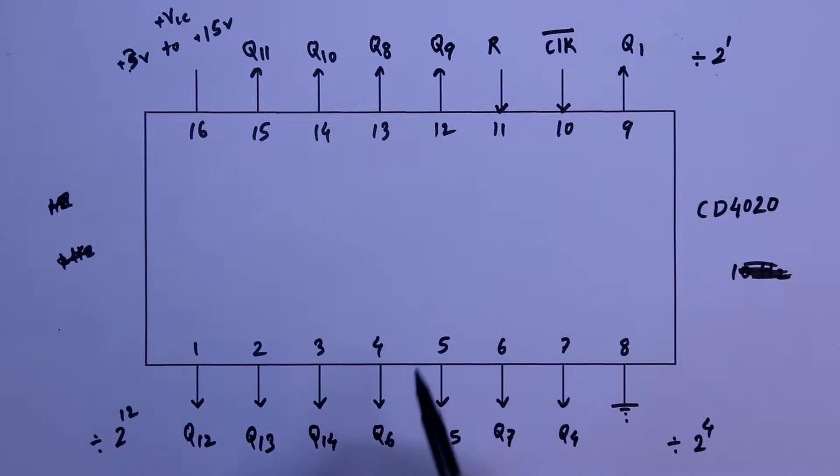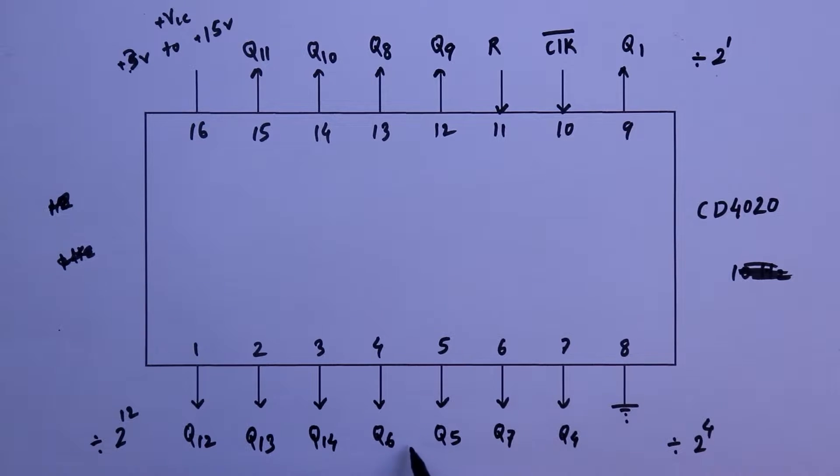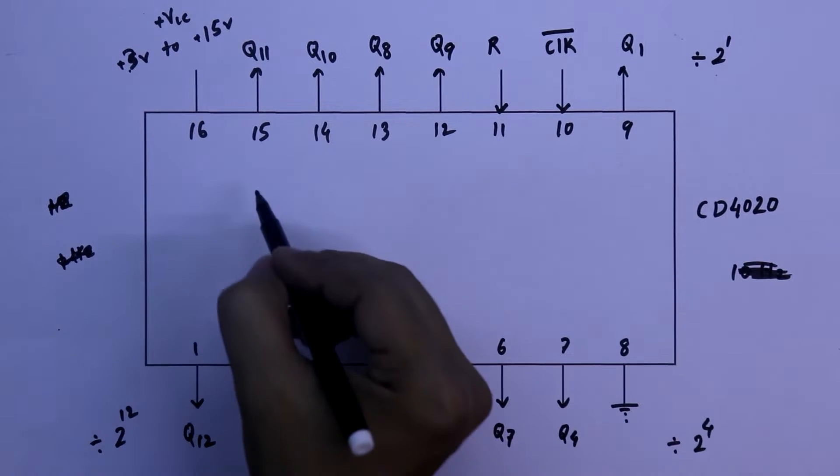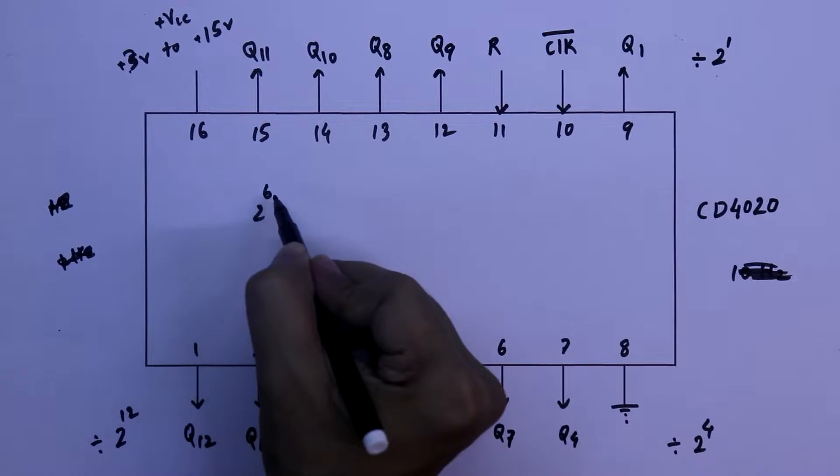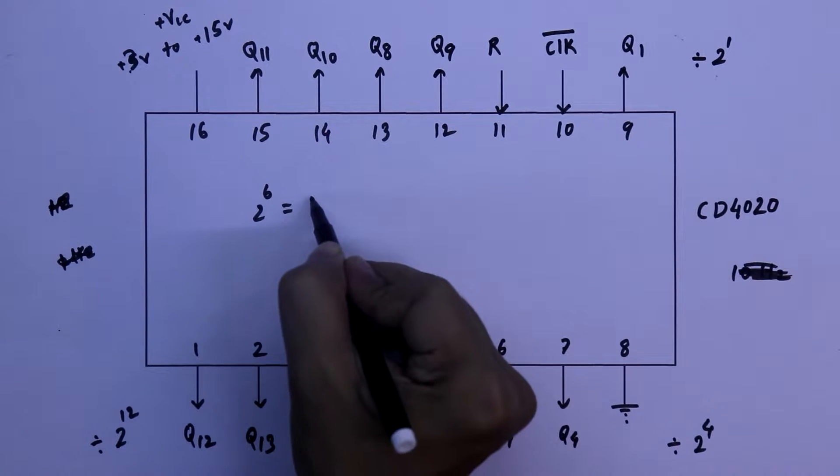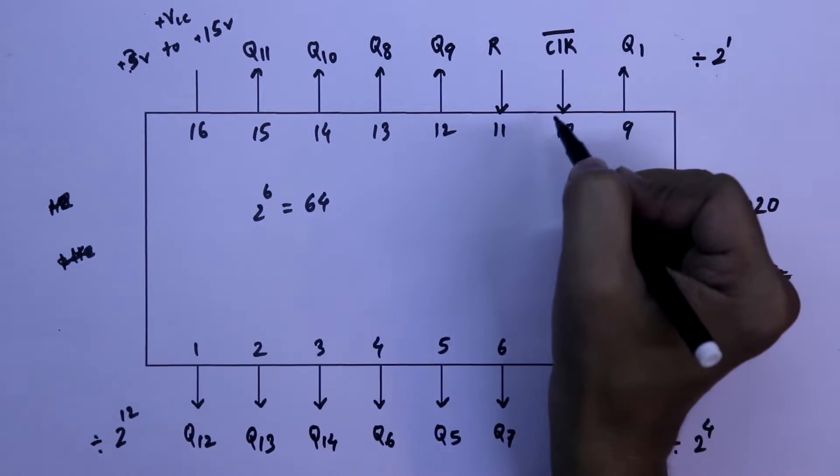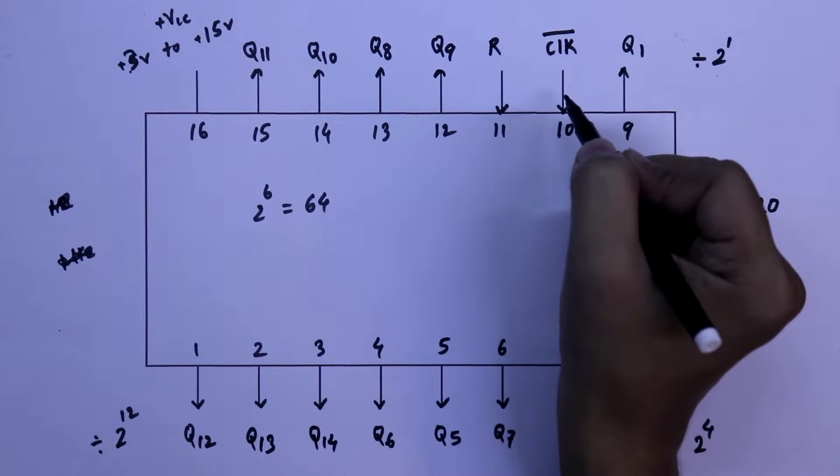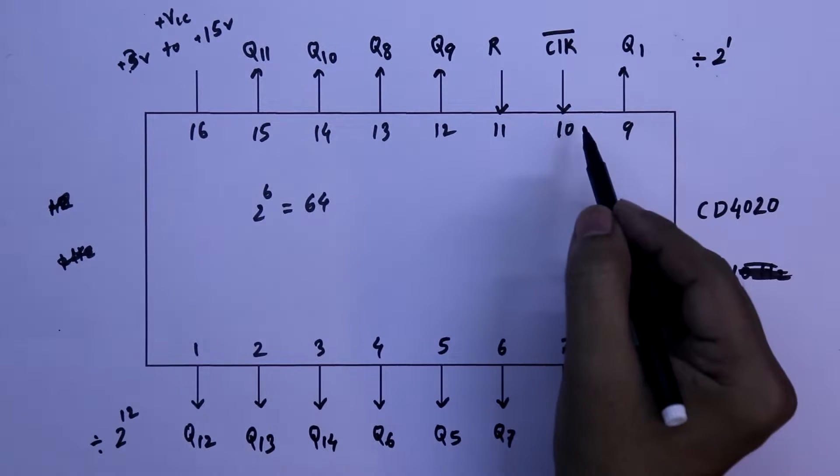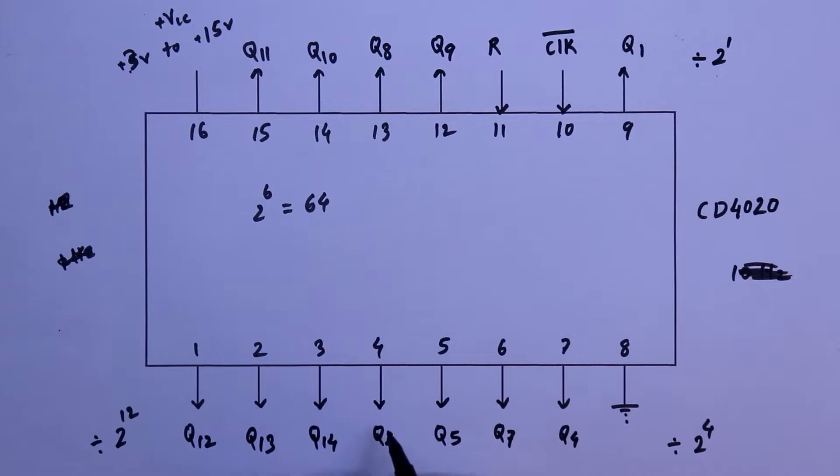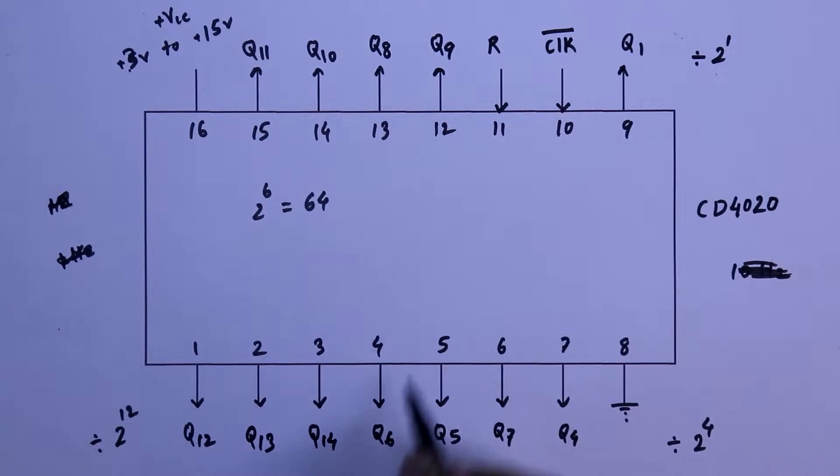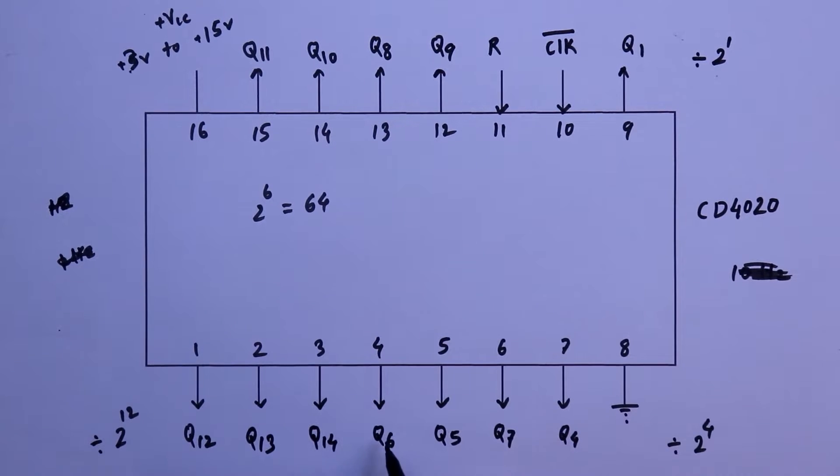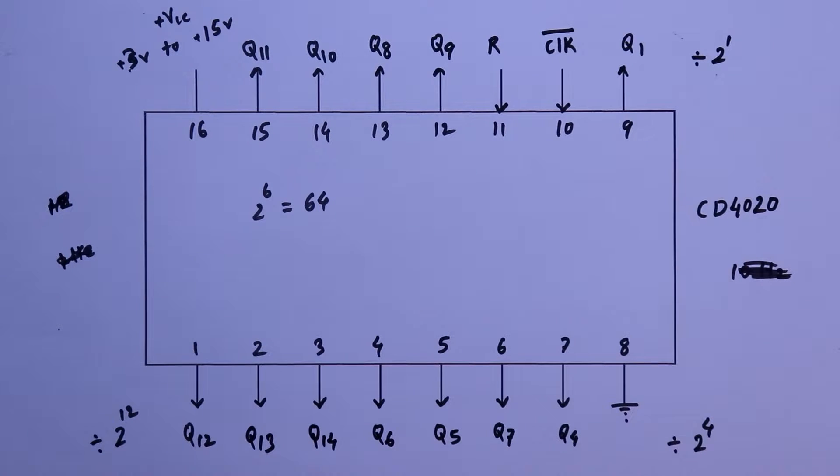For example, let's take pin number 4. It is Q6. Q6 means 2 to the power 6, and it is equal to 64. So if the input frequency is 64 Hz, then the output in pin 4 will be 1 Hz, because it is dividing 64 Hz by 2 to the power 6. 64 by 64, it is 1. So this is how we can use this IC. Now we will see this in practical.